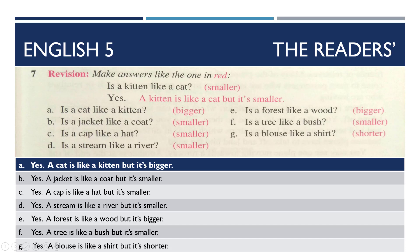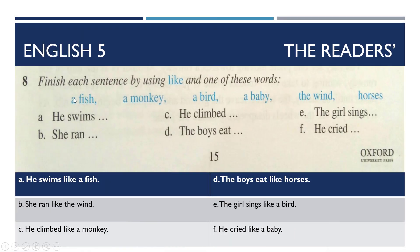Next: Is a jacket like a coat? Yes, a jacket is like a coat, but it is smaller. Next: Is a cap like a hat? Yes, a cap is like a hat, but it is smaller. Next: Is a stream like a river? Yes, a stream is like a river, but it is smaller. Next: Is a forest like a wood? Yes, a forest is like a wood, but it is bigger. Next: Is a tree like a bush? Yes, a tree is like a bush, but it is bigger. Is a blouse like a shirt? Yes, a blouse is like a shirt, but it is shorter. The next exercise you will solve in your notebooks.